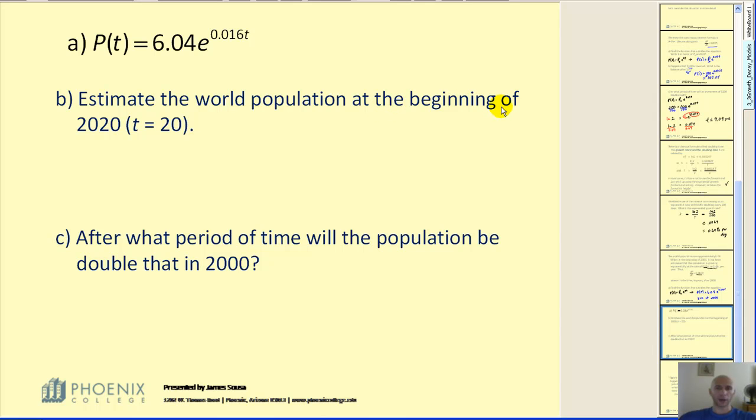Estimate the world population at the beginning of 2020. Again, since our base year was the year 2000, we use the value t equal to 20. So P(20) is equal to 6.04 times e raised to the power of 0.016 times 20.